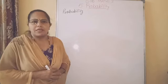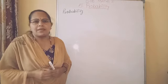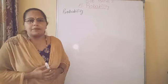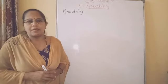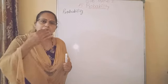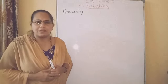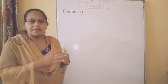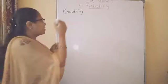In mathematical language, the possibility of any event is expressed in the form of a number, and that is called probability. Probability can also be expressed in the form of a fraction, or it is also expressed in the form of a percentage. Suppose, for example, for any random experiment, S is the sample space.